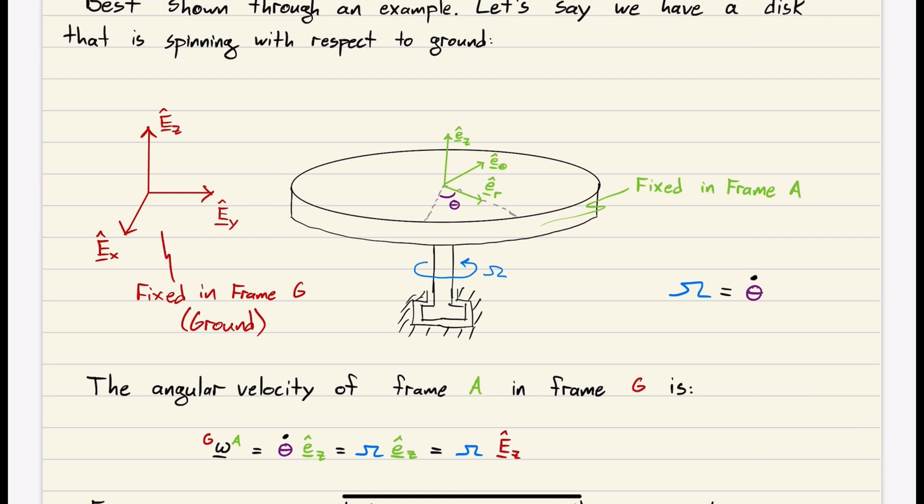The disk spins at an angular velocity of omega. Omega equals theta dot, and theta is the angle we make as we spin. So as we spin, the angle gets bigger.